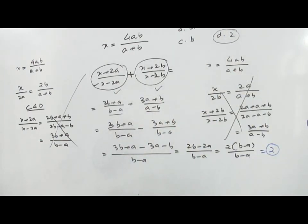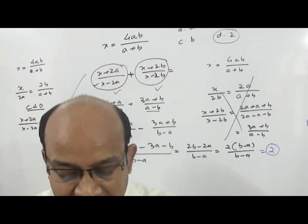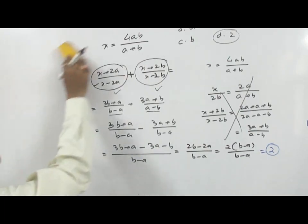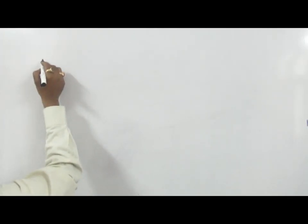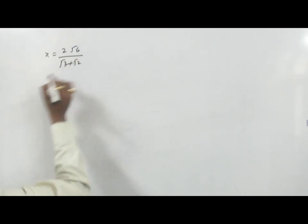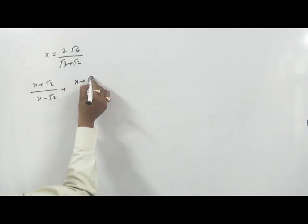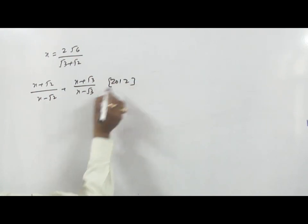There are several questions of this type asked in SSC examinations. I am writing each question and you will see the answer is always 2. Try to solve yourself using this formula, but in examination always mark the answer as 2. One more question: we have X is equal to 2 root 6 upon root 3 plus root 2. What is the value of X plus root 2 upon X minus root 2, plus X plus root 3 upon X minus root 3? Its answer again is 2.